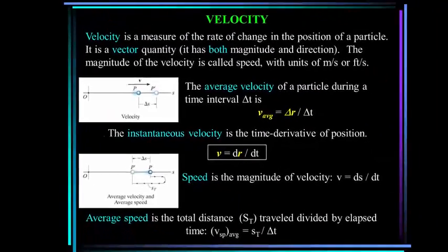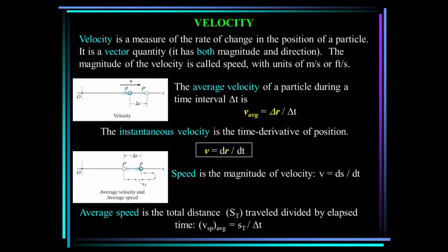Now, let's define velocity. It is a measure of the rate of change in the position of a particle. It's a vector quantity, so it has both magnitude and direction. The magnitude of the velocity is called speed, with units meters per second or feet per second. The average velocity of a particle during a time interval Δt is just its change in position over change in time.